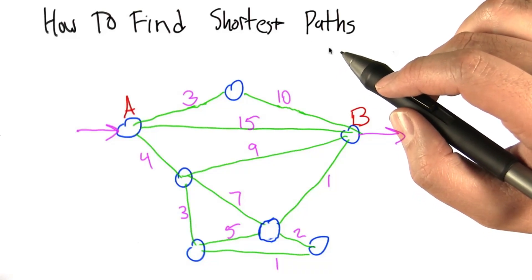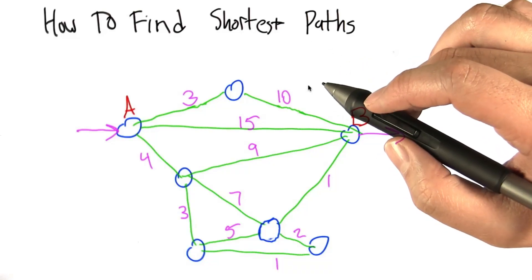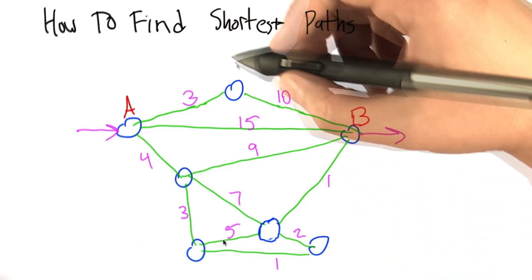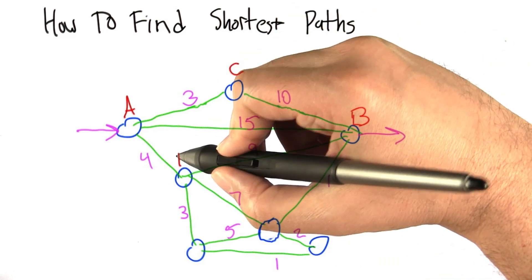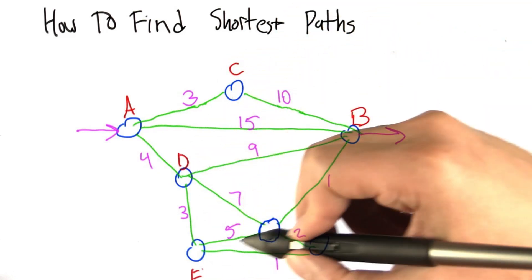Let's take a look at an approach for actually finding shortest paths in graphs, and we'll use this example once again. It'll help to actually have names for the other nodes, so I'm going to add those in.